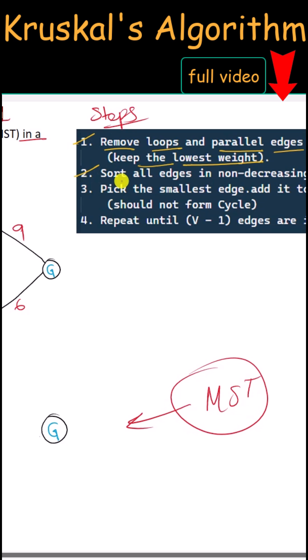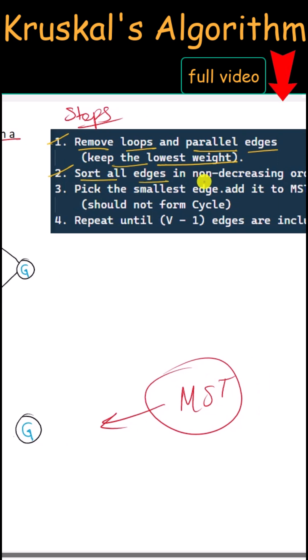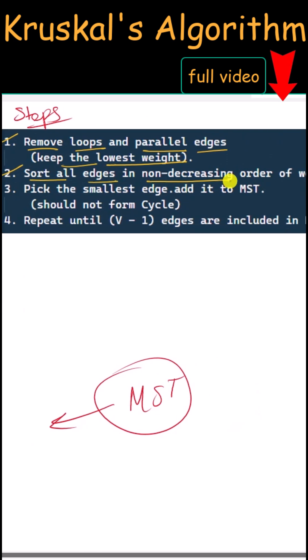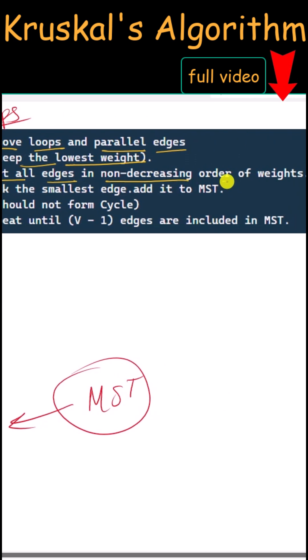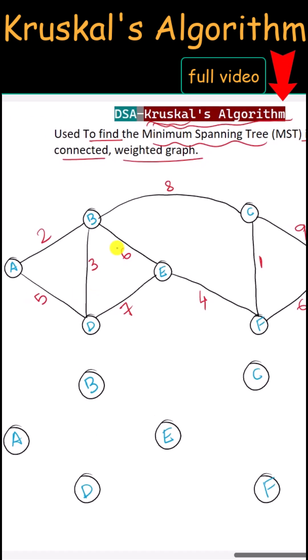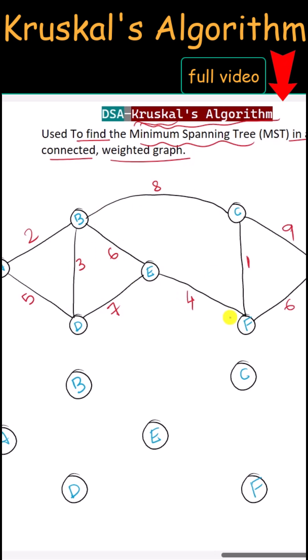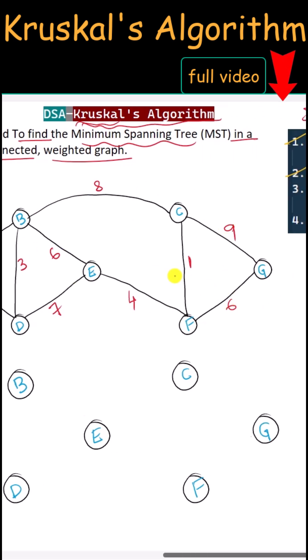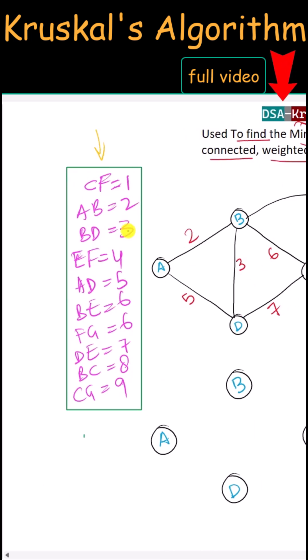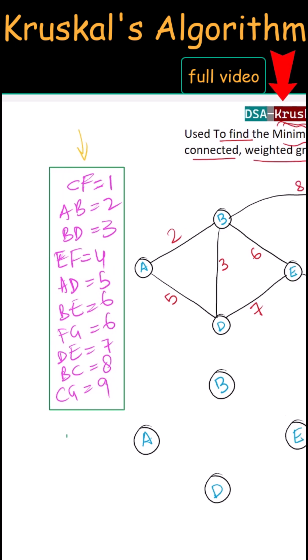Next, we have to sort all the edges in non-decreasing order of their weights. So in the graph we sort all of the edges based on their weight, and here all the edges are sorted in increasing order of their weight.